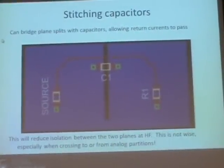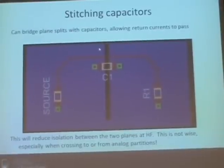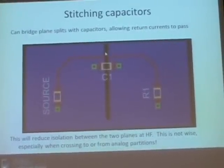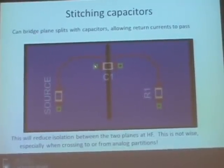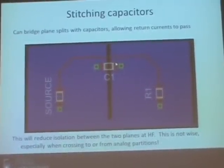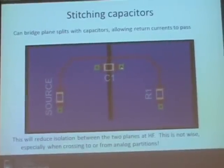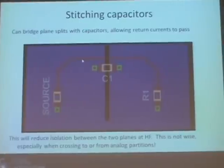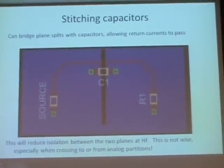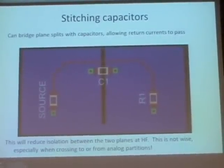Another concept is stitching capacitors — but with some caution. If we're forced to split the ground plane and run a trace over the split, we can somewhat mitigate the problem with a stitching capacitor: a bypass capacitor placed between two points on the same plane. At high frequency it acts like a short circuit, allowing return currents to flow close to the trace. However, it will never be as good as a continuous ground plane.